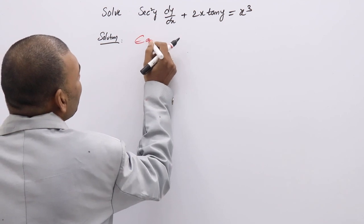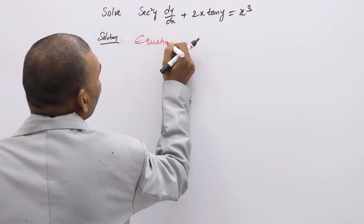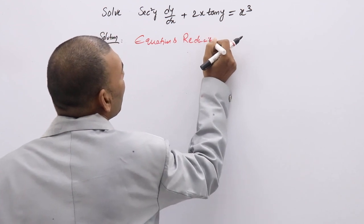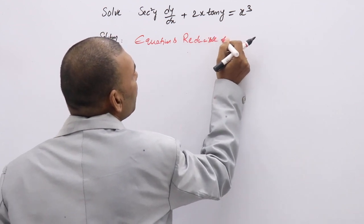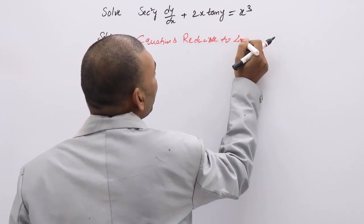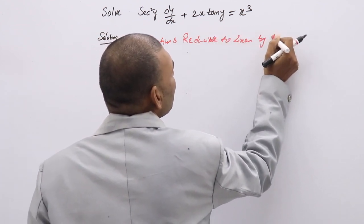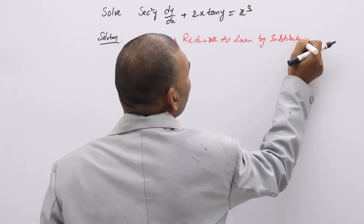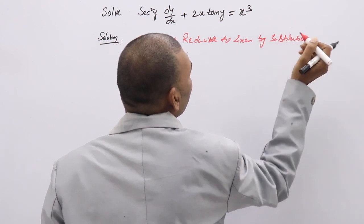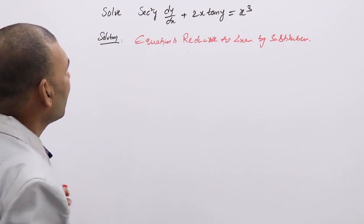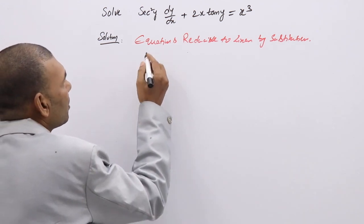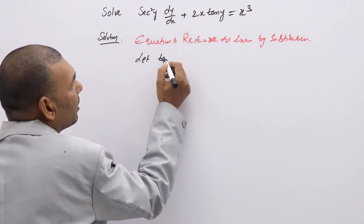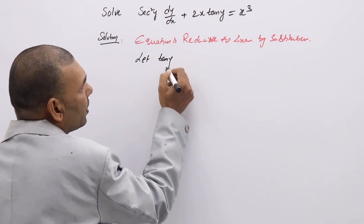We can name this type as equations reducible to linear by substitution. You have to substitute. Here, the substitution is: let tan y = u.